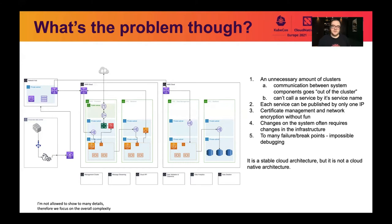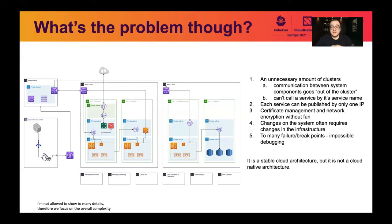A change or new component can lead to introducing a new account or network tier, increasing overall complexity and the number of failure points for communication. Finding where something fails is really difficult. Overall this architecture is actually pretty stable for cloud architecture, but it's not really cloud native — and that bothered my team and me massively.